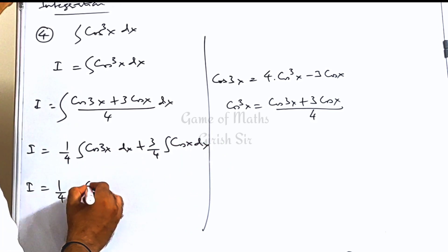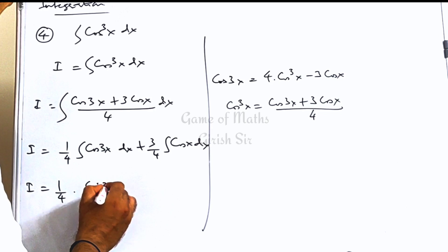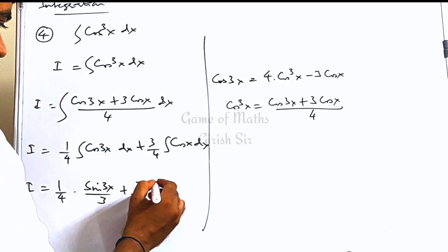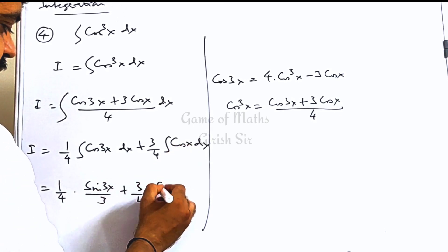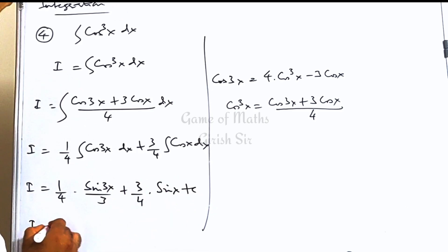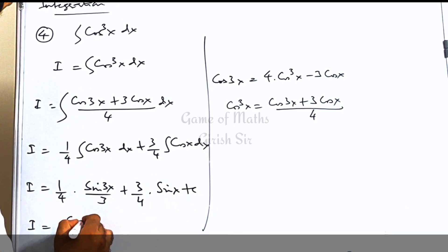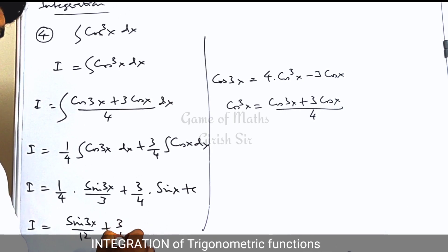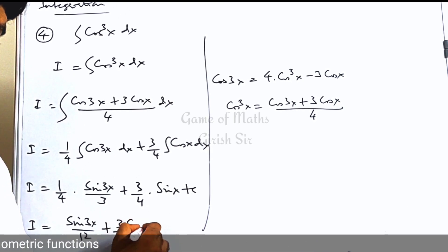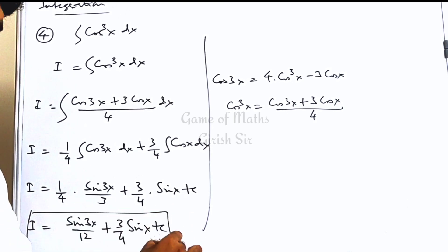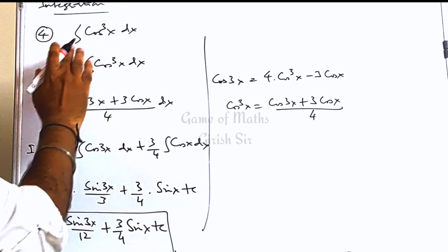The integral of cos x is sin x, and the integral of cos 3x is sin 3x divided by 3. So this would be the answer for this question.